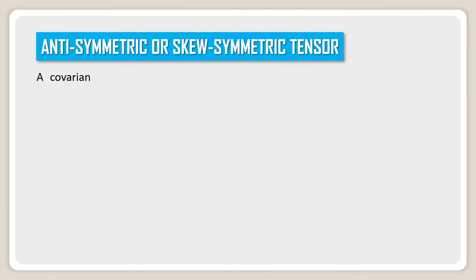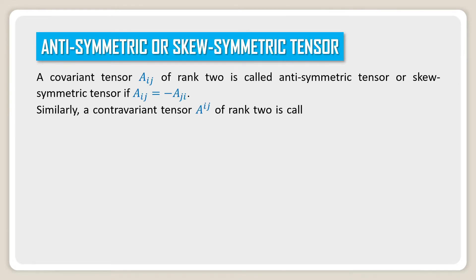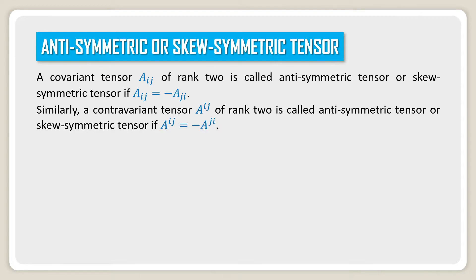Antisymmetric or skew-symmetric tensor. A covariant tensor a_ij of rank 2 is called antisymmetric or skew-symmetric if a_ij equals minus a_ji. Similarly, a contravariant tensor a^ij of rank 2 is called antisymmetric or skew-symmetric if a^ij equals minus a^ji.